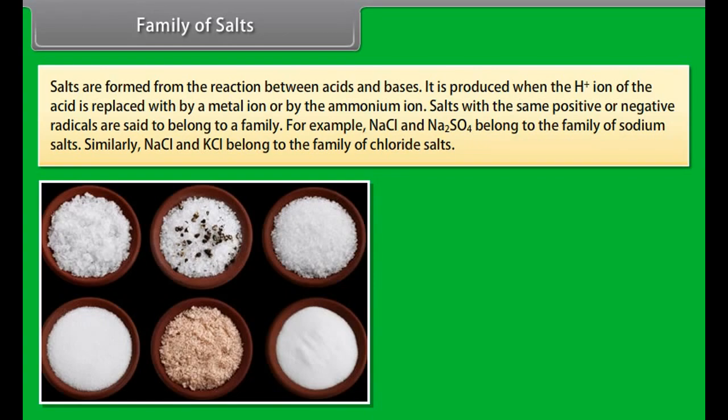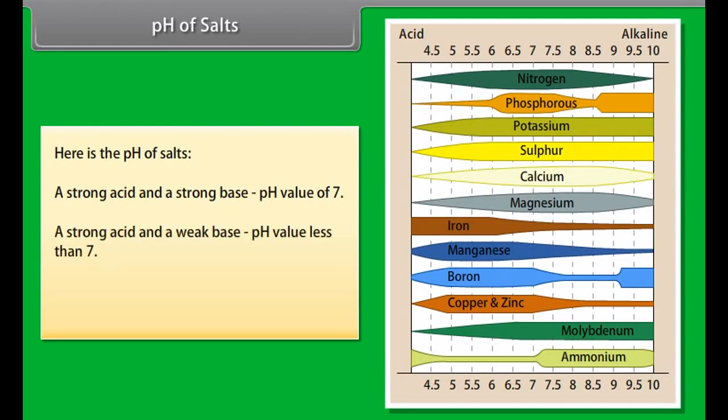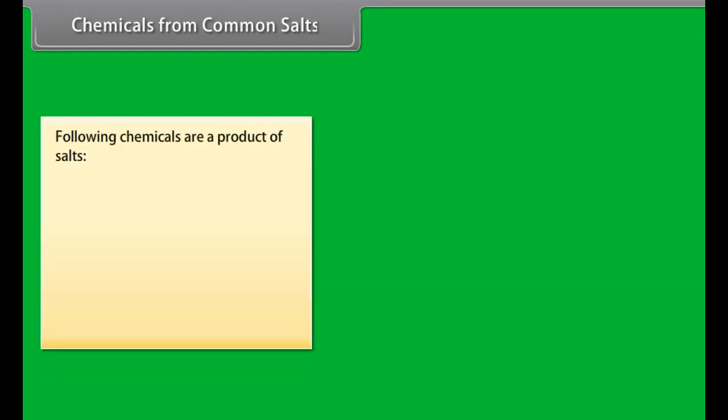The pH in the digestive system. Our stomach produces hydrochloric acid which helps in the digestion of food without causing any harm to the stomach. When the stomach produces too much acid, it leads to indigestion and causes pain and irritation. The solution to this pain is the use of bases called antacids which neutralize the excess acid.